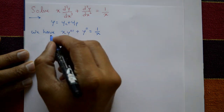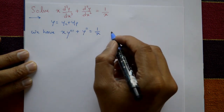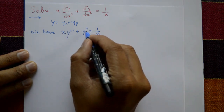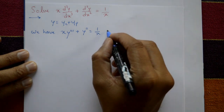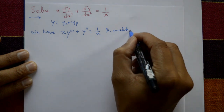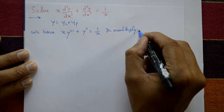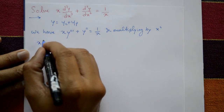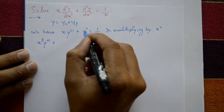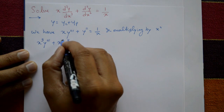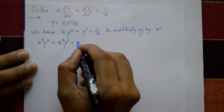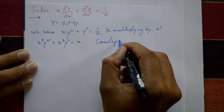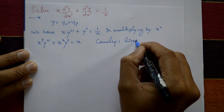We have x·y''' + y'' = 1/x, which is not yet standard Cauchy-Euler form. Multiply both sides by x². This gives x³y''' + x²y'' = x. Now this is a proper Cauchy-Euler linear equation.